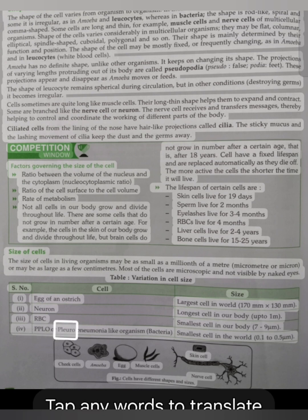IV. PPLO or pleuro pneumonia like organism (bacteria). Smallest cell in the world: 0.1 to 0.5 micrometers.